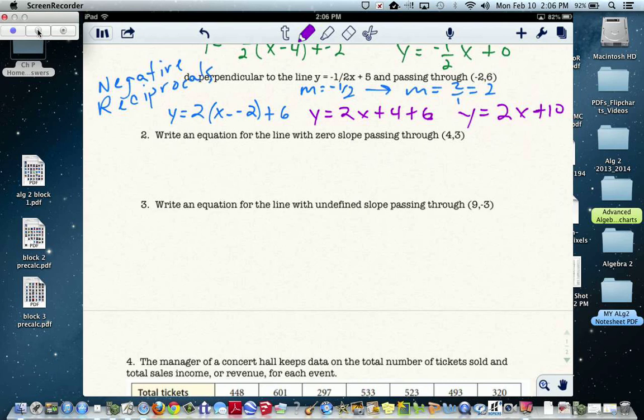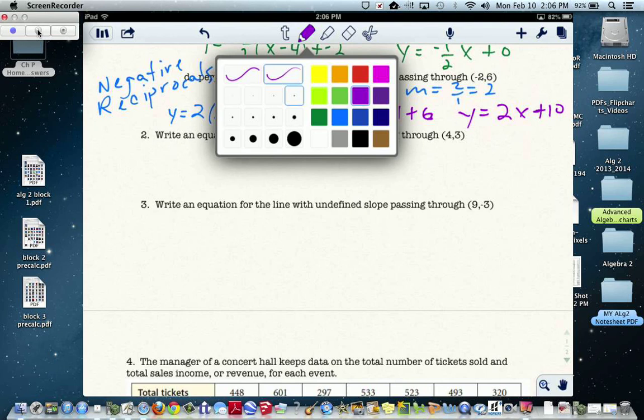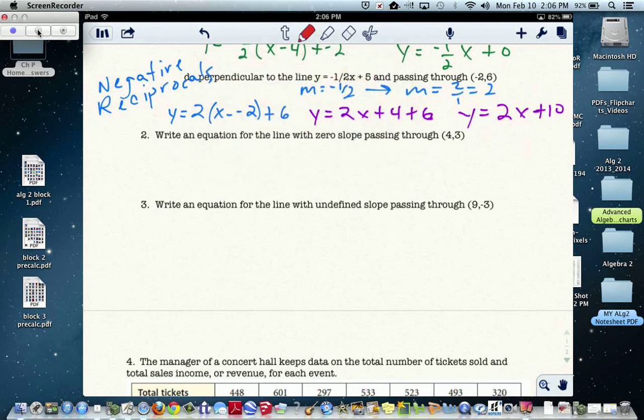Now we're moving on, and this is a little bit of review. Remember that if you have 0 slope, they're talking about a horizontal line. So a horizontal line is y equals...